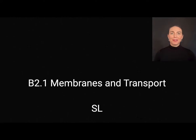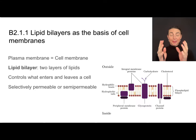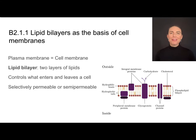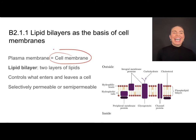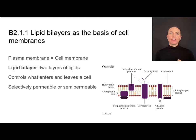This is the video for the standard level portion of B2.1 on membranes and transport. All cells have a plasma membrane, also referred to as cell membrane. Those two terms are synonymous, and it is composed of two layers of phospholipids, called the lipid bilayer — bi meaning two.